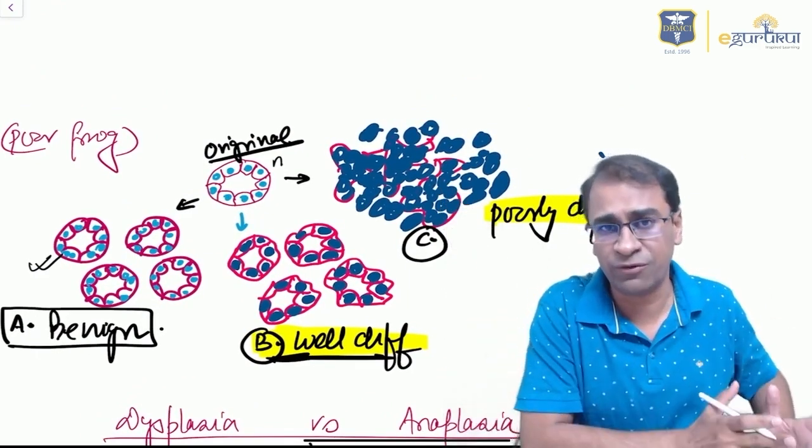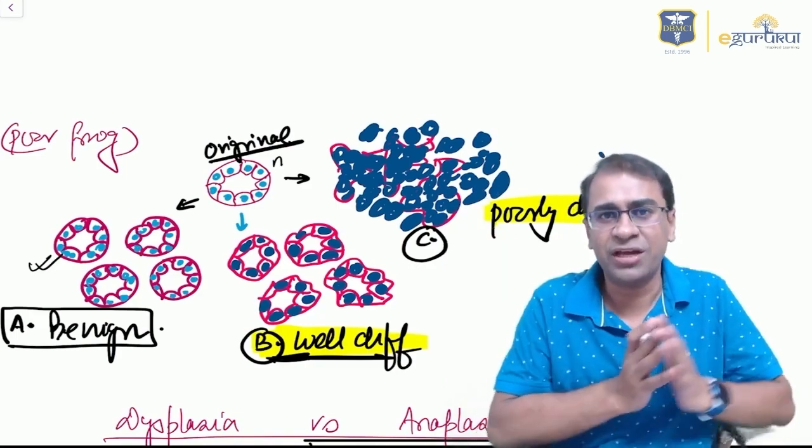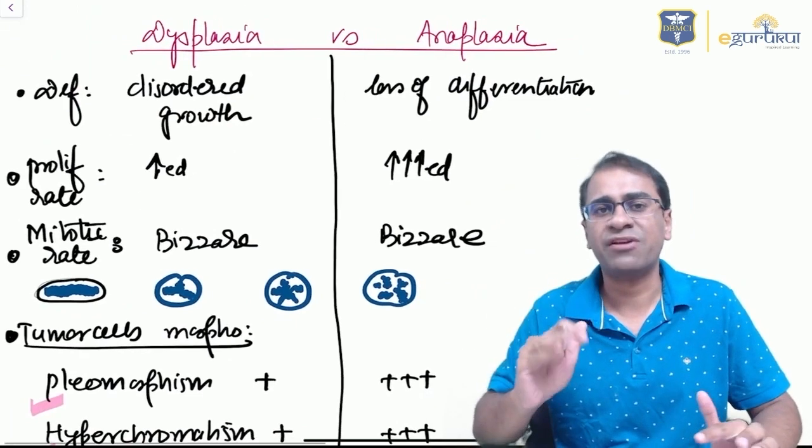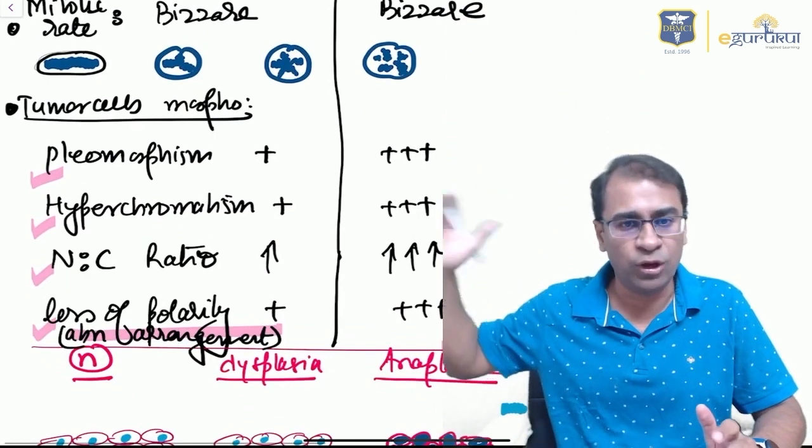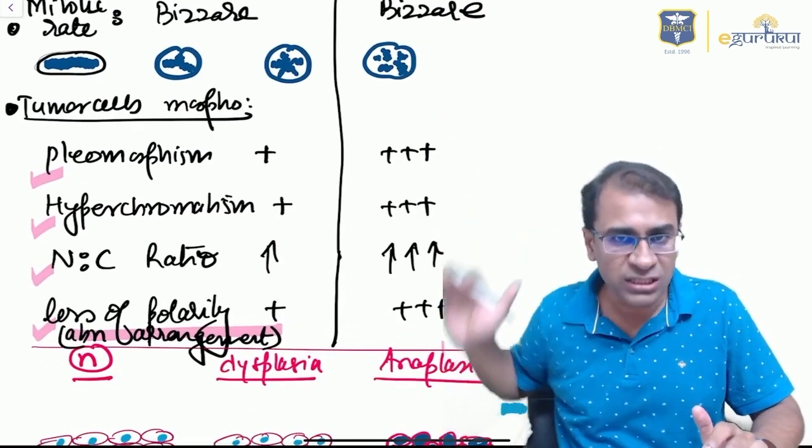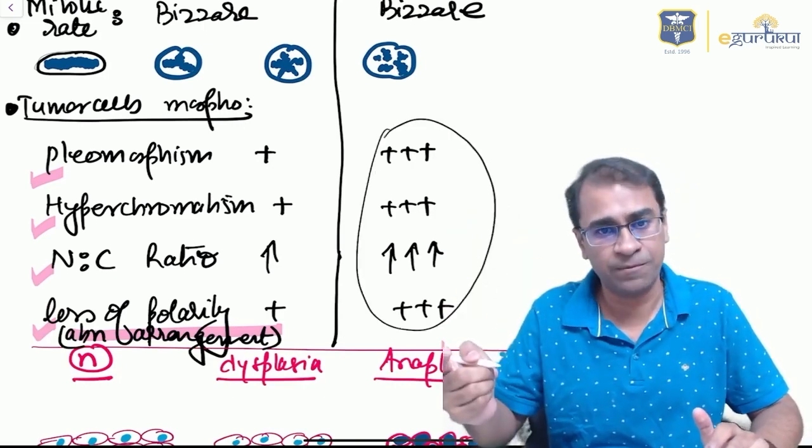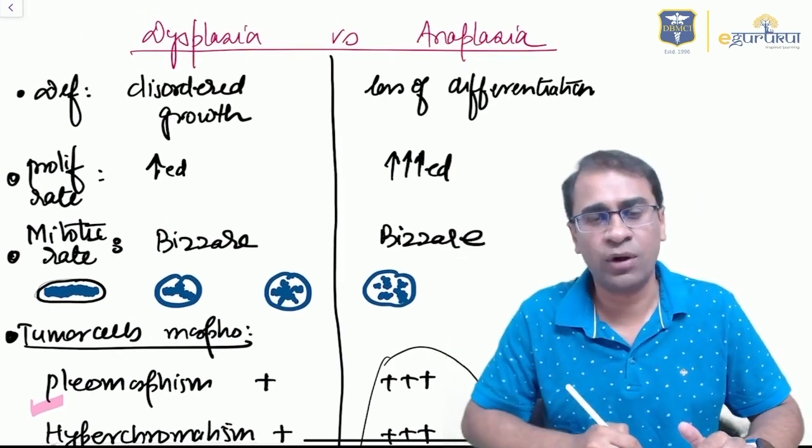When the glands become completely anaplastic, you can't differentiate whether the cells are glands or not. It's called poorly differentiated adenocarcinoma. That will explain the difference of dysplasia and anaplasia. The common findings are pleomorphism, hyperchromatism, high N:C ratio, and loss of polarity. All these four features are more in anaplasia compared to dysplasia.